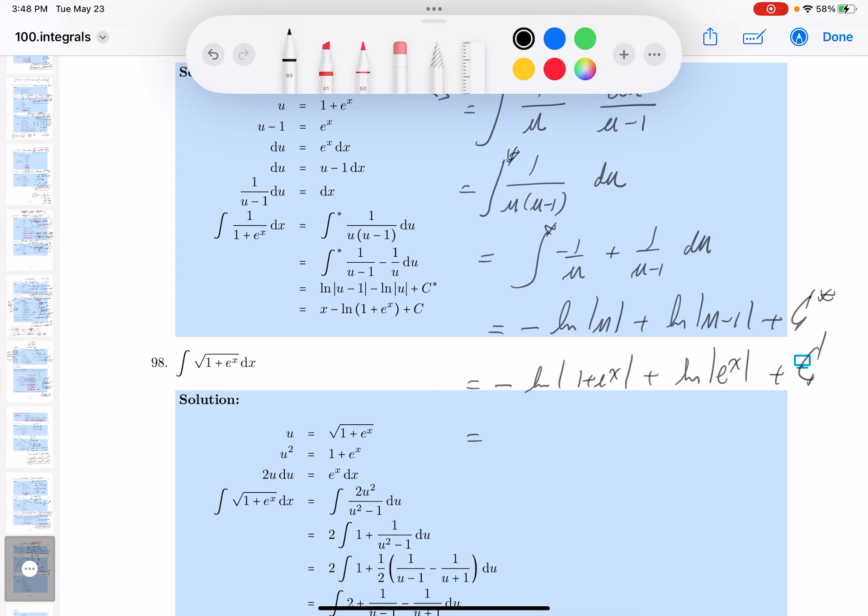Let's simplify a little tiny bit. The natural log of e to the x is just going to be x. And then you're going to get minus the natural log, and 1 plus e to the x is always positive. Don't worry about the absolute value anymore, plus c. Put a little box on it.